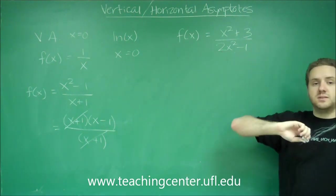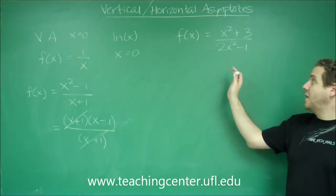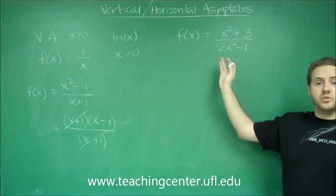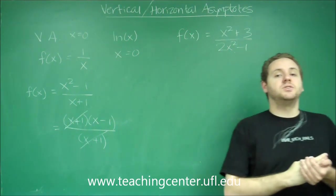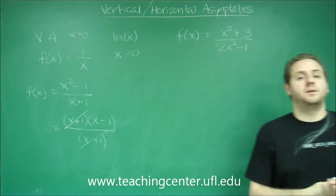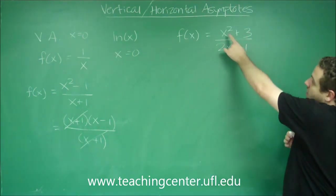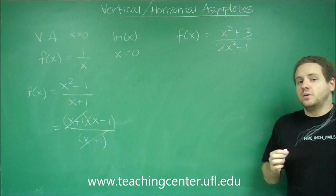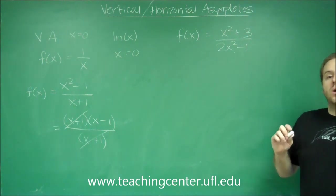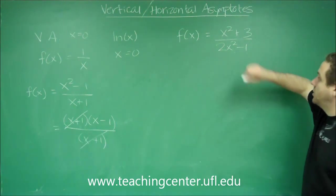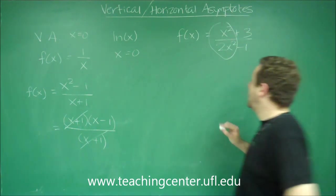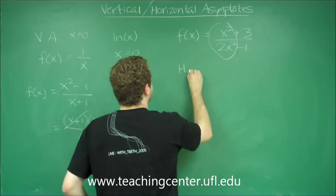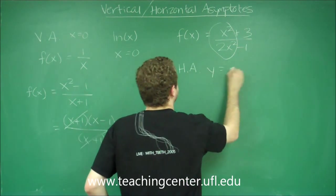Now, if you have a rational function, though, so remember a rational function is one where you have a quotient of polynomials, there's a much simpler way to do it. All you need to do is look at the degree of the top and the bottom. In this case, both of these have degree two, so all you need to do is take the coefficients on those terms, which would be one divided by two, and your horizontal asymptote here is y equals one-half.